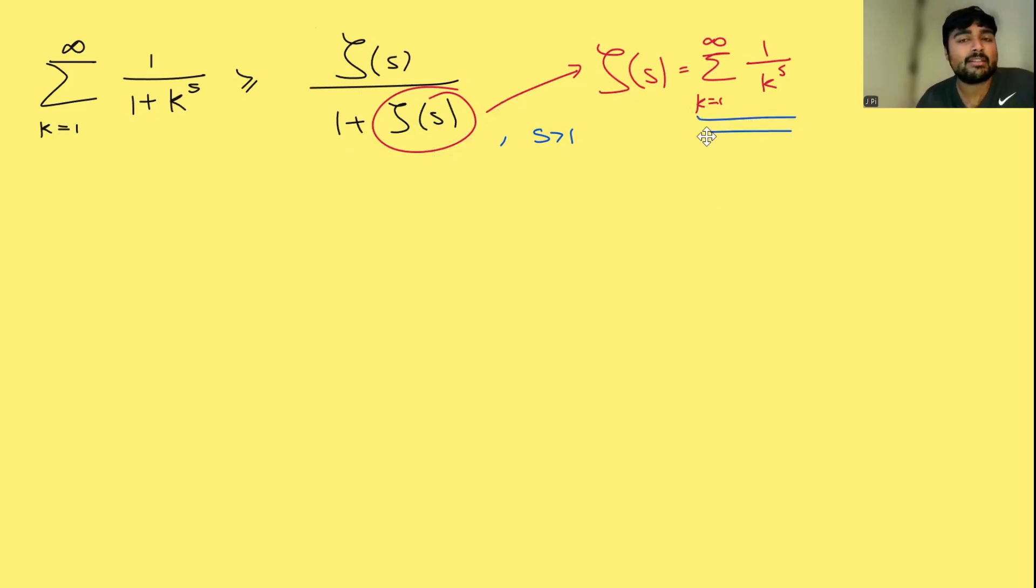So also s has to be bigger than 1, so that this thing converges. How on earth do we prove this? Let's dive in.